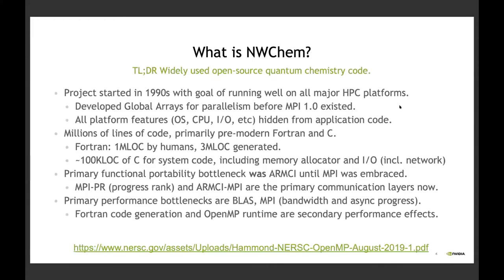NWChem is a widely used open source quantum chemistry code with, depending on how we do the math, thousands or hundreds of users, running on every type of computer and supercomputer I'm aware of. It runs on laptops; the only thing it doesn't do is Windows. It's massively parallel in the MPI GA sort of way, which used to be sufficient — you just keep scaling with MPI or equivalent communication models. Now, multicore is a little more important than it used to be.